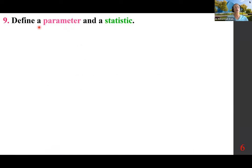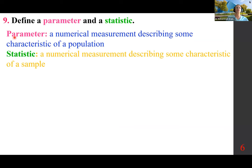Define a parameter and a statistic. A parameter is a numerical measurement describing some characteristic of a population. A statistic is a numerical measurement describing some characteristic of a sample. In other words, a parameter pertains to the population, and a statistic pertains to a sample.